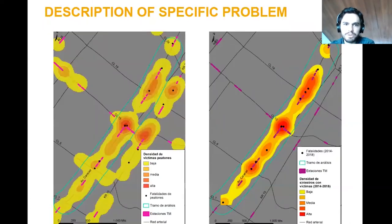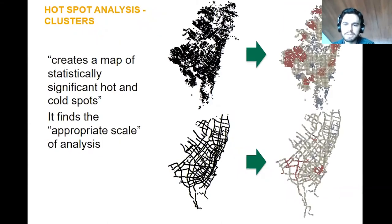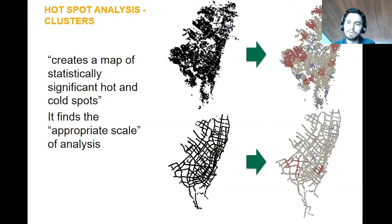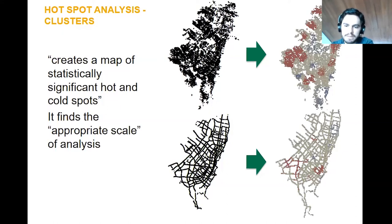Another tool I wanted to show is hotspot analysis. The difference is that this one creates a hotspot based on the statistical significance of the hotspot. It captures places where concentrations are higher not due to random variation, but because there is an actual pattern. That's the difference with kernel — kernel does not have the statistical significance, which implies that some hotspots identified with kernel can be the result of random variation, while hotspot analysis corrects that issue.